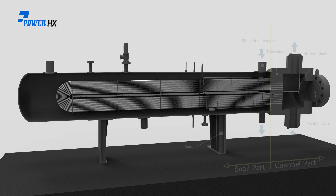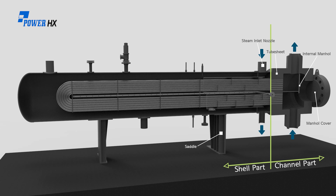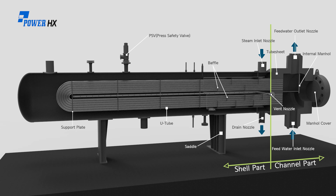The feedwater heater composition is as follows. On the steam inlet side, there are baffles in the desuperheating zone, support plates, baffles in the drain cooling zone, a pressure safety valve, and a vent nozzle. On the tube side, there is a feedwater inlet nozzle and a U-tube outlet nozzle.